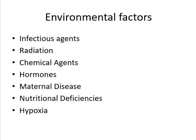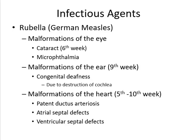Starting with infectious agents: rubella (German measles) may lead to malformation of the eye. Around the ninth week, it may also lead to malformation of the ear and congenital deafness due to destruction of the cochlea. During the fifth to tenth week of development, it may lead to heart malformations including patent ductus arteriosus, atrial septal defect, or ventricular septal defects.